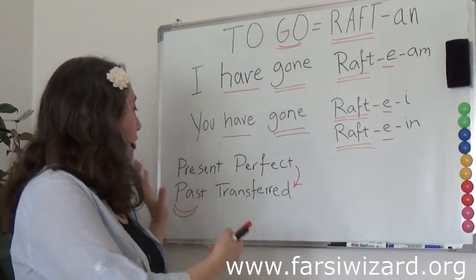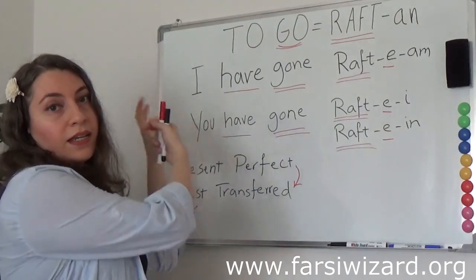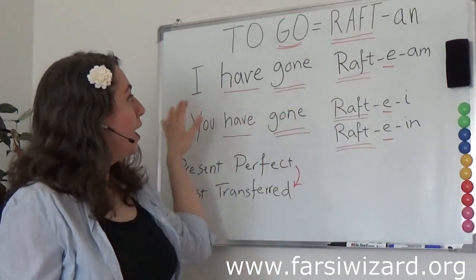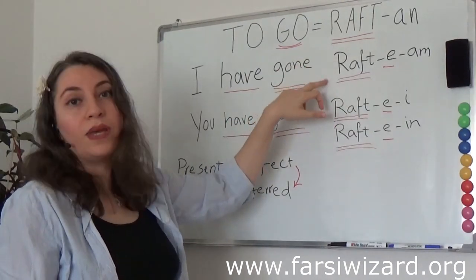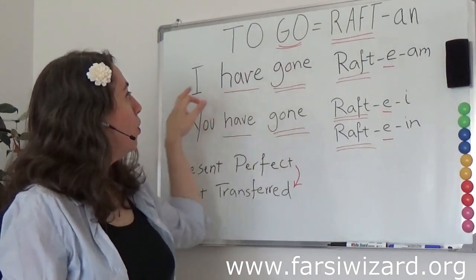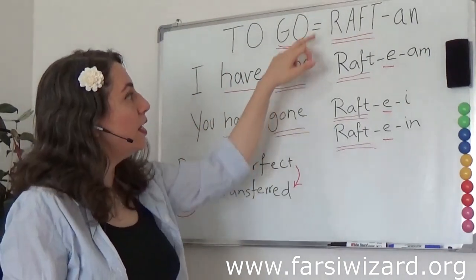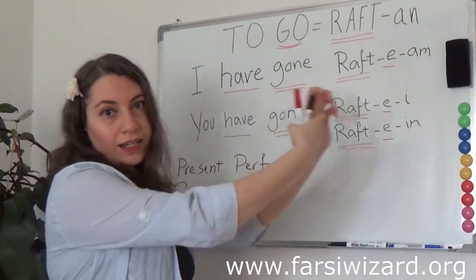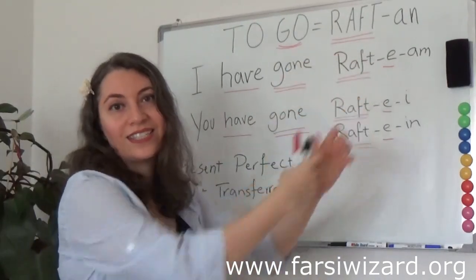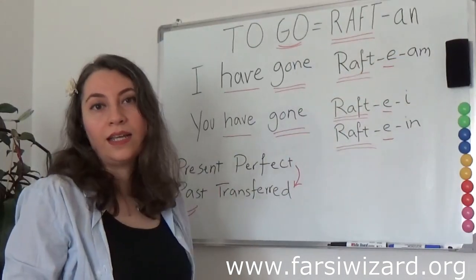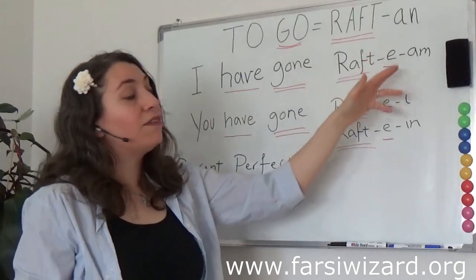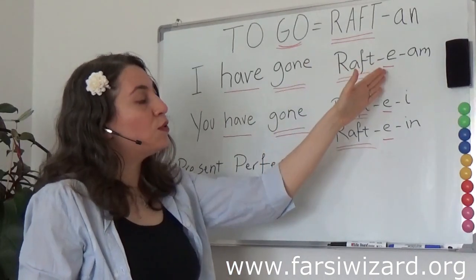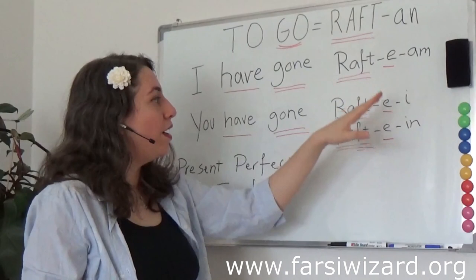We think of this verb tense as something that happened in the past, then we put a hook and drag it into the present time. That is why when you look at this tense in Farsi, you will notice that it is made based on the past stem. So 'I have gone' — because for us this is a past transferred — is RAF-TE-AM. RAF is your past stem, the -E is the hook that drags this into the present time, and -AM is the ending. So for 'I have gone' we have RAF-TE-AM, simply because this is a variety of past being dragged into the present tense by this hook -E.